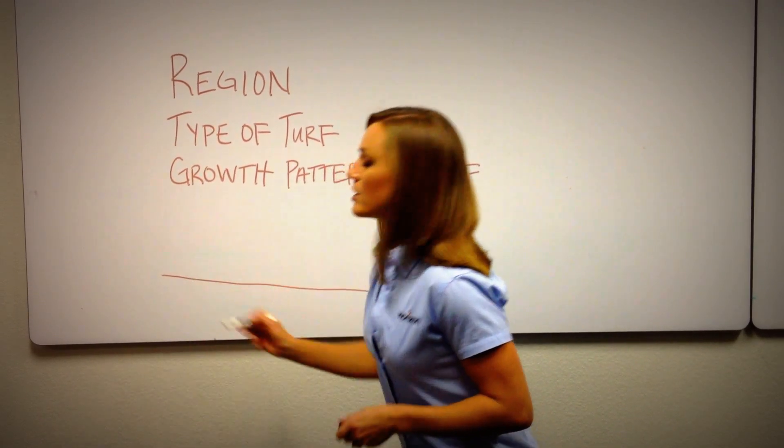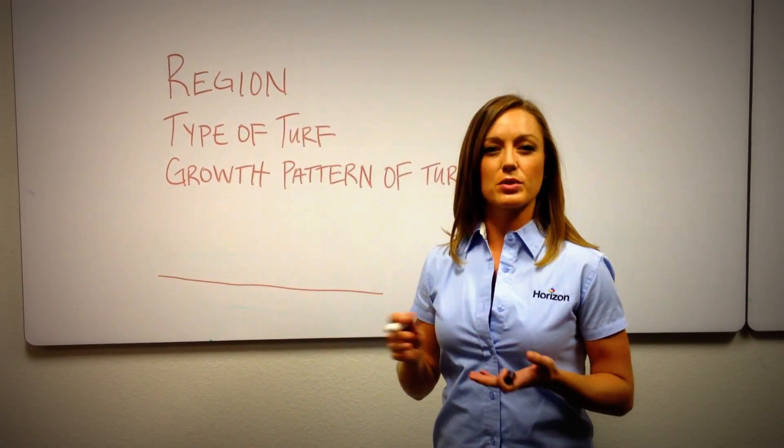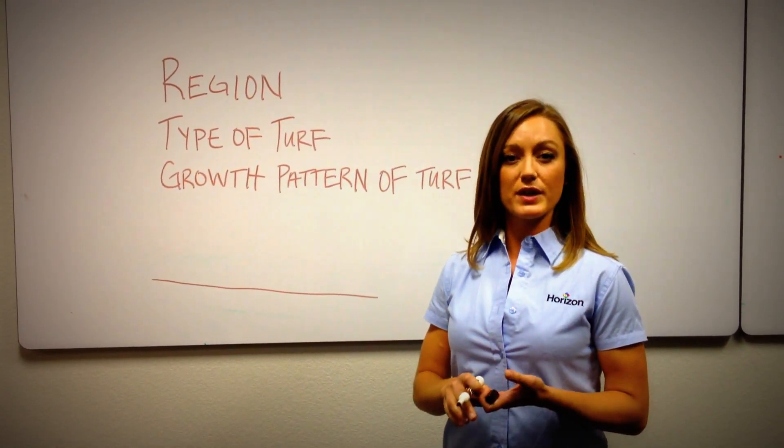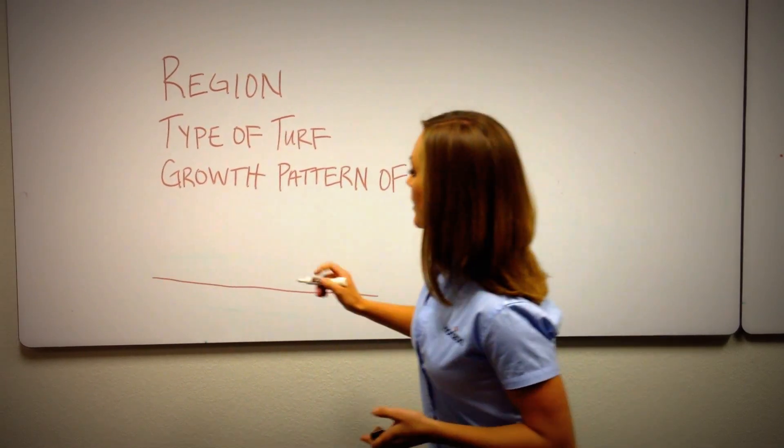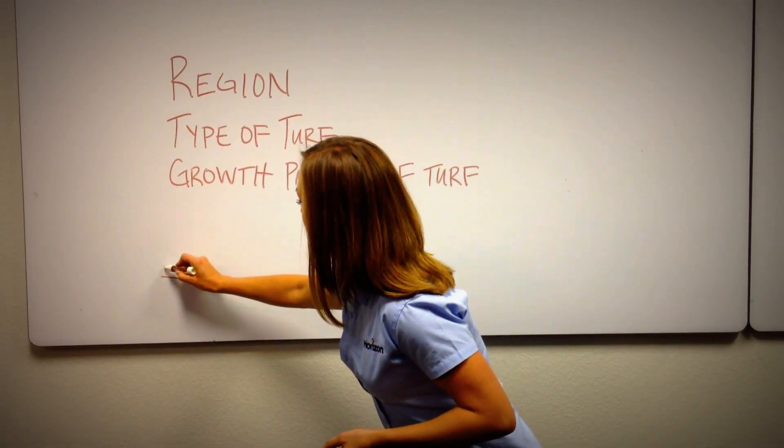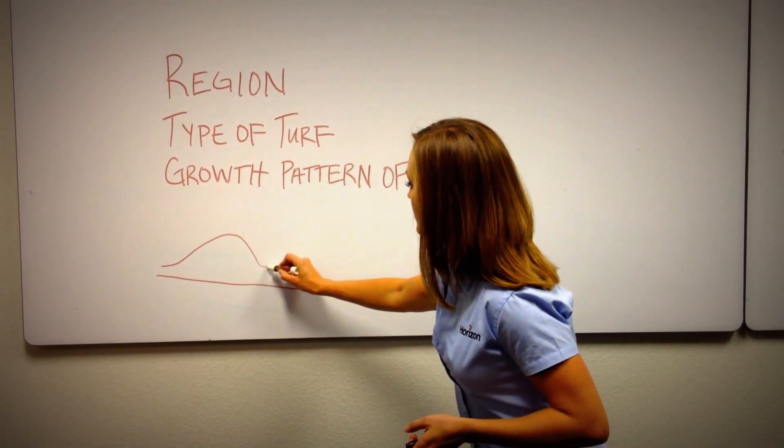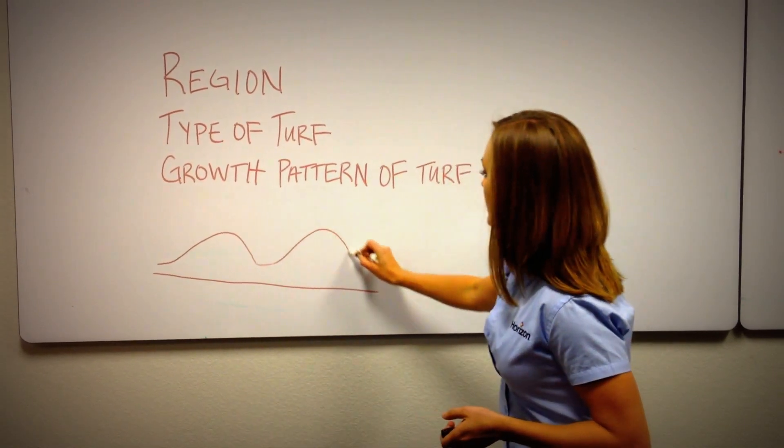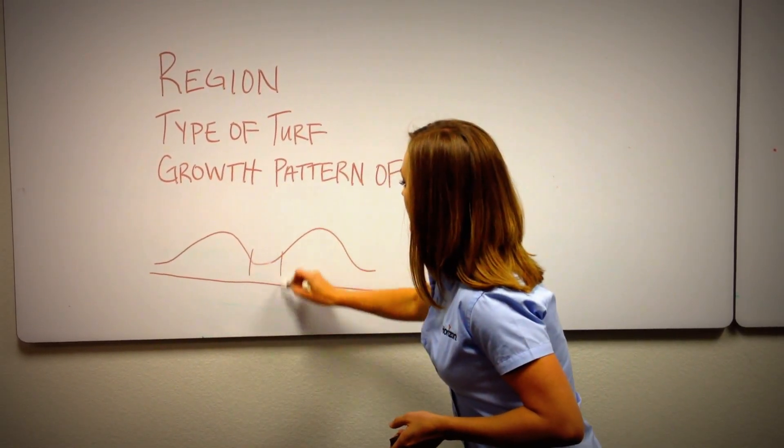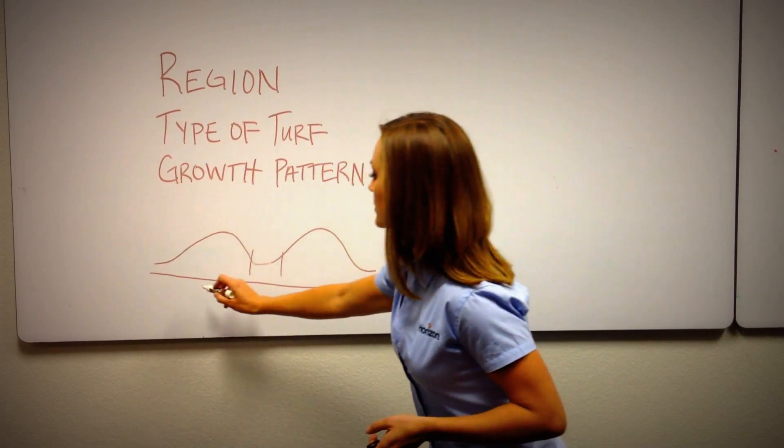One are cool season grasses. Think of perennial ryegrass or Kentucky bluegrass, tall fescue, those are probably common types that you've heard of. Those are grasses that are primarily growing well in the spring and in the fall. They kind of get a little tired in the summer, not growing very actively.